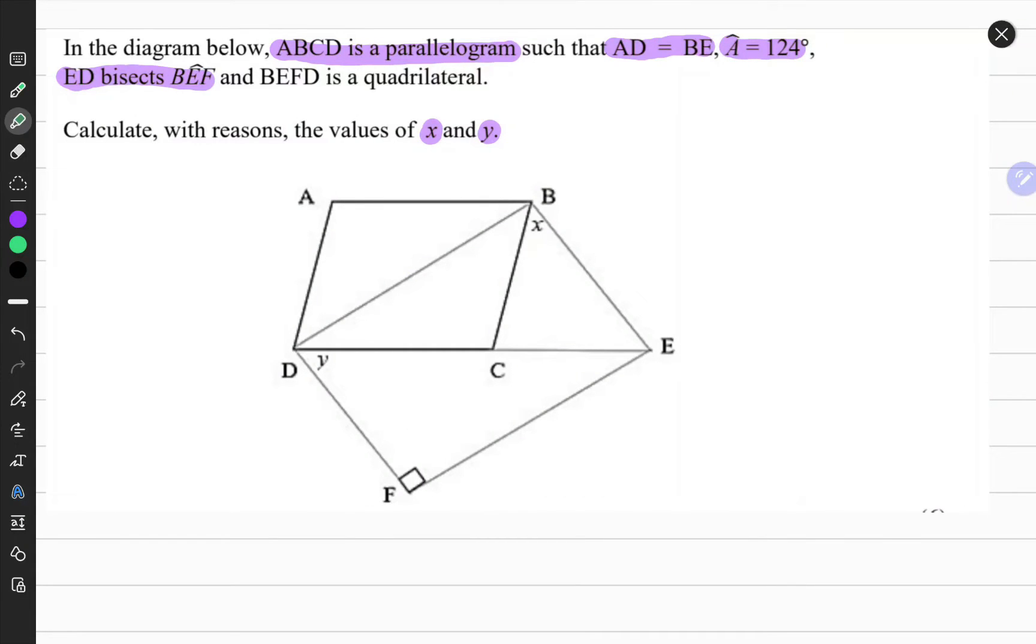Hey guys, in today's video we're going to do a bit of Euclidean geometry. We're given that ABCD is a parallelogram such that line segment AD equals line segment BE. We're also given that angle A has a size of 124 degrees, and that line segment ED dissects angle BEF.